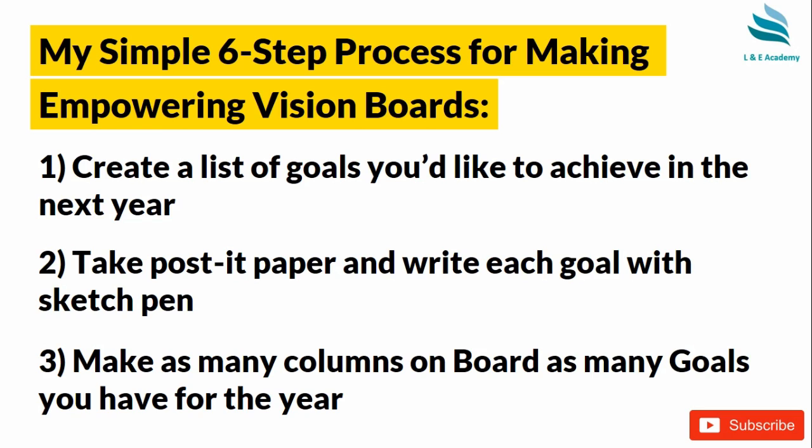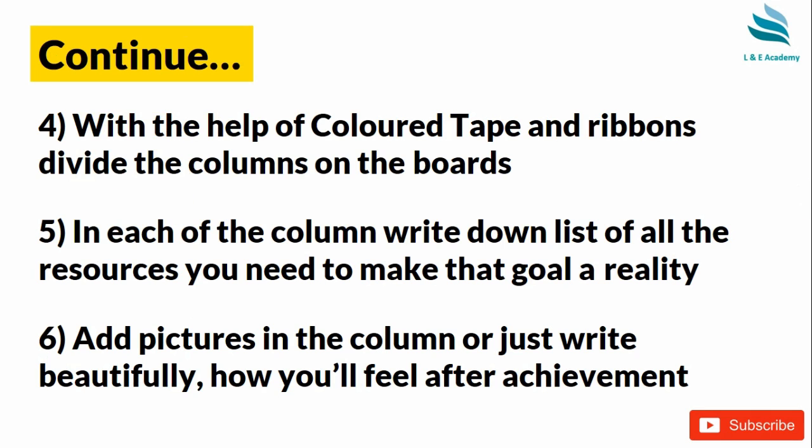The third step is to make columns on the board. For example, at the beginning of the year I had ten goals, so I made ten equal columns on my board. These ten columns represent my ten goals. So: I created ten goals, wrote them on post-it paper with sketch pen, and made ten columns on the board. That board I am going to show you at the end of this video.